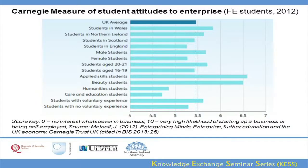This piece of statistics, coming from the BIS research, looks at students' attitudes to enterprise. You can see that Northern Ireland is above the UK average, but according to the definition at the very bottom, we need to get close to 10 if we're going to see the prospects of people really taking the step into entrepreneurial new venturing as an increasing norm.